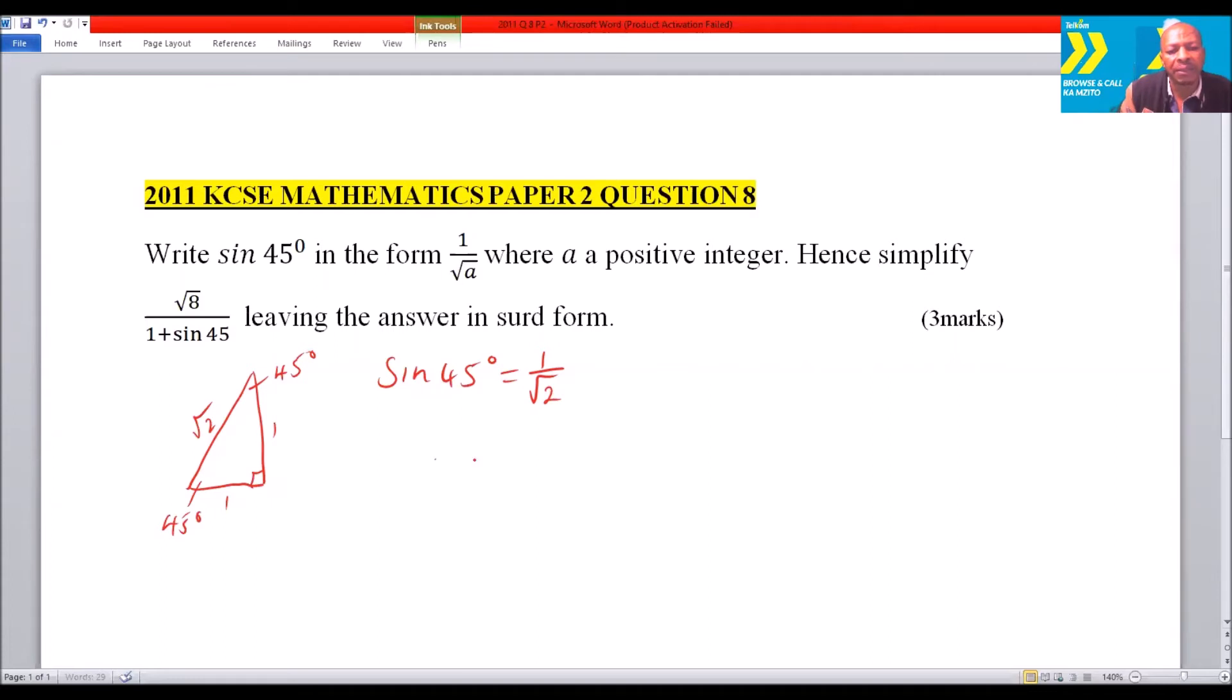Then we can say √8 divided by 1 plus sin 45°, which will be 1 over √2. We can simplify—this can be written as √(4 × 2).